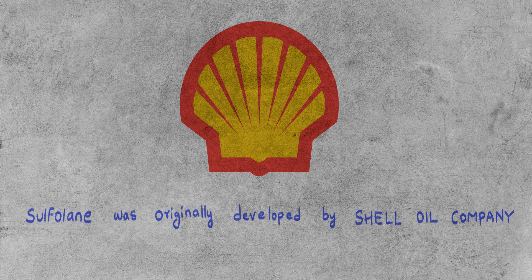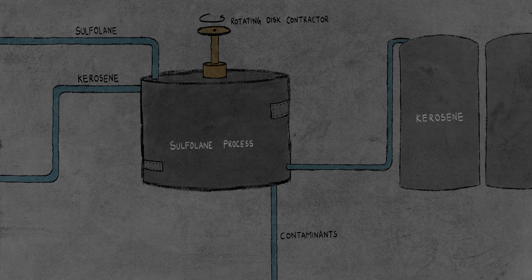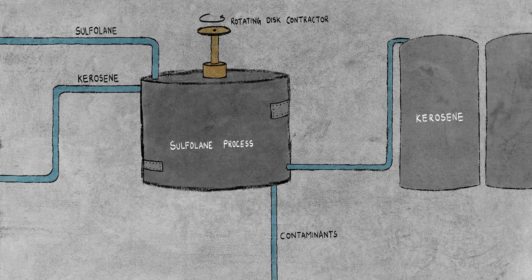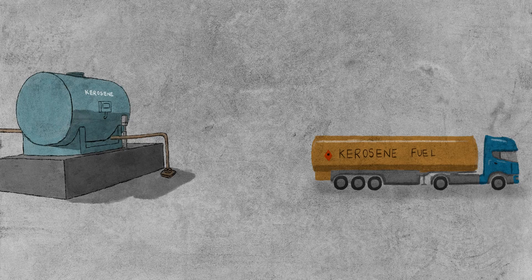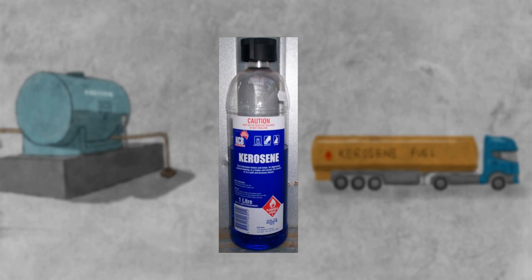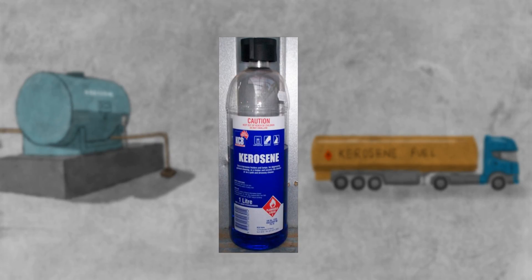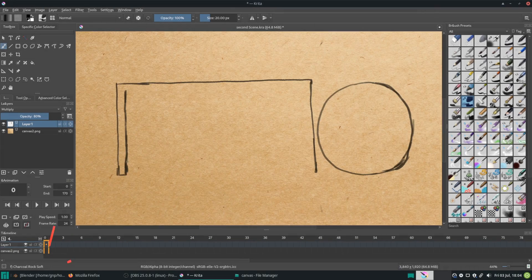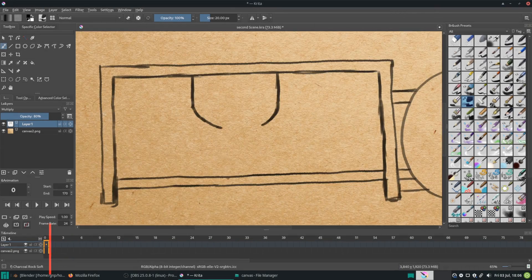The Sulfolane process was created by Shell Company in 1962 and is still used in many extraction units. The solvent used in this process is called sulfolane, a strong polar compound that is more efficient than the glycol system used in the Udex extraction process. After extraction is complete, the refined kerosene is stored in tanks for shipping — and this is how kerosene is made.